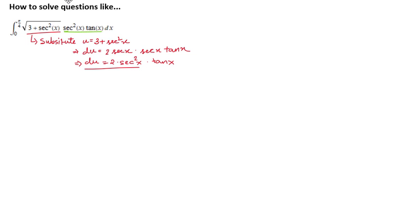This is the term we are using to solve our integral question. Now, I am not changing the limits right now. Let us substitute u. Let us substitute this part, three plus secant square x as u. And then, let us remove this secant square x tan x dx part and substitute it with du.